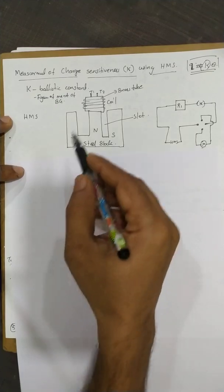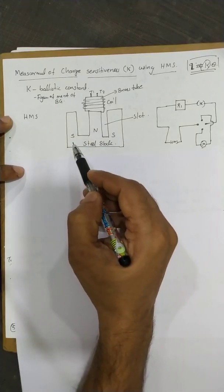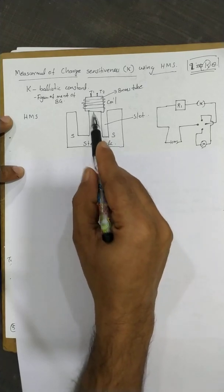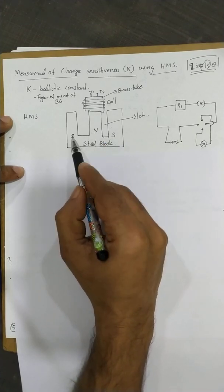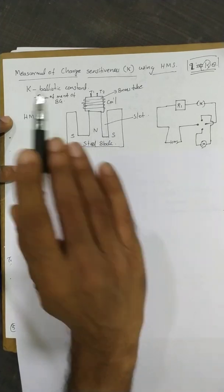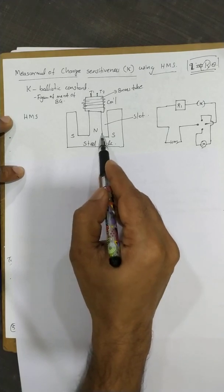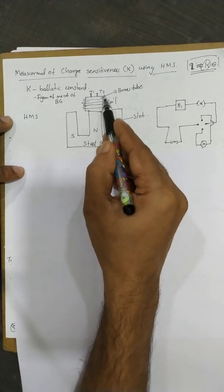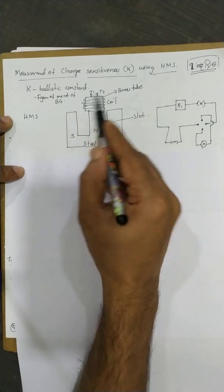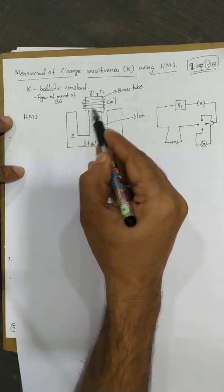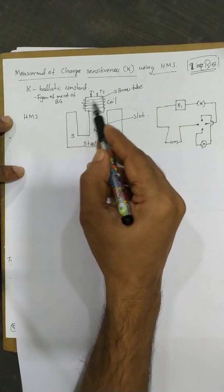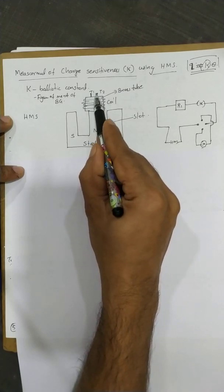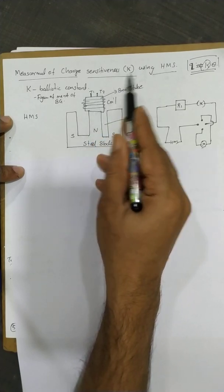The Hibbert's Magnetic Standard consists of a steel block at the center with a north pole and a south pole. There is a slot, a brass tube, and a single-turn copper coil with terminals T1 and T2.